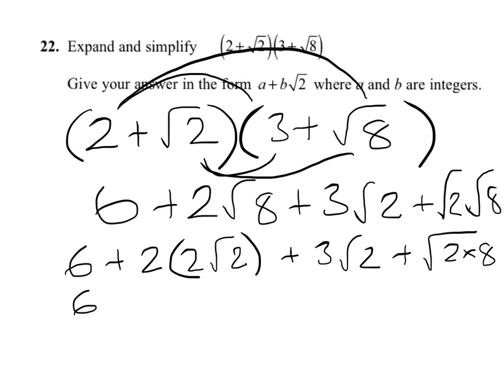So the next line. 6 plus 4 root 2. That's 2 times 2 root 2. Plus 3 root 2. Now 2 times 8 is 16. The square root of 16, of course, is 4.